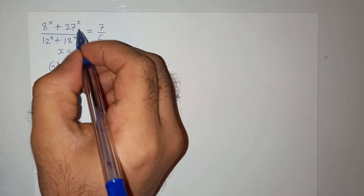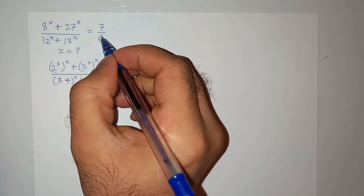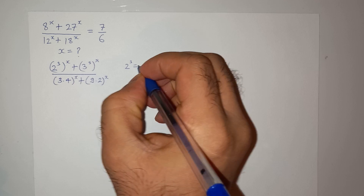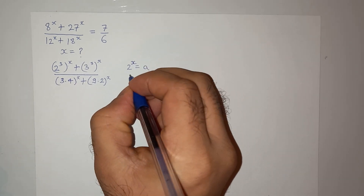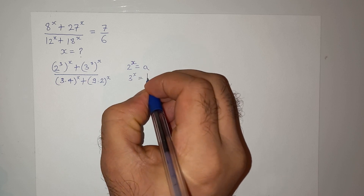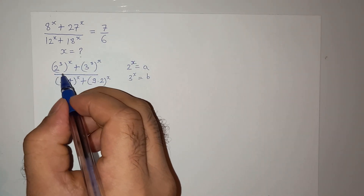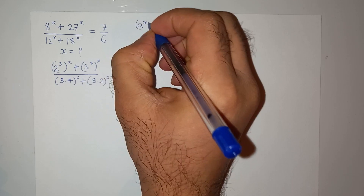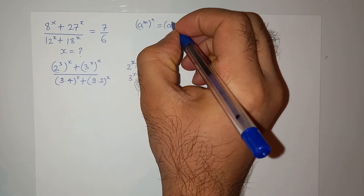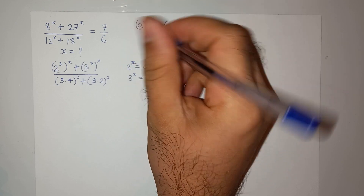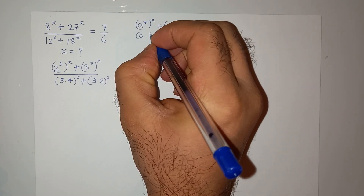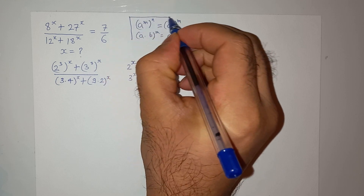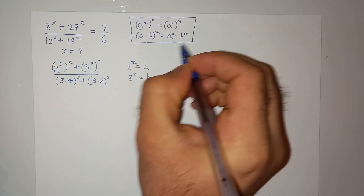I am trying to solve the left-hand side first and then equate it to the right-hand side, which is 7/6. Let us assume 2^x = a and 3^x = b. We will apply exponential rules: a^(m·n) = a^(n·m), and (ab)^m = a^m · b^m.